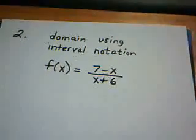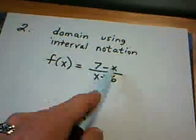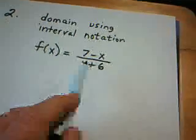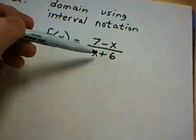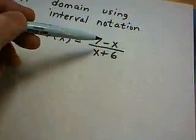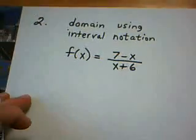Now, first of all, the reason this is called a rational function, 7 minus x is a polynomial, x plus 6 is a polynomial, and when you take the ratio of two polynomials and you make a function out of it, that's called a rational function.